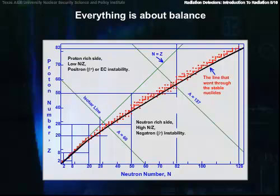As implied by the line here on our Z versus N graph, it would be great if we could describe a line that went through the stable nuclides.